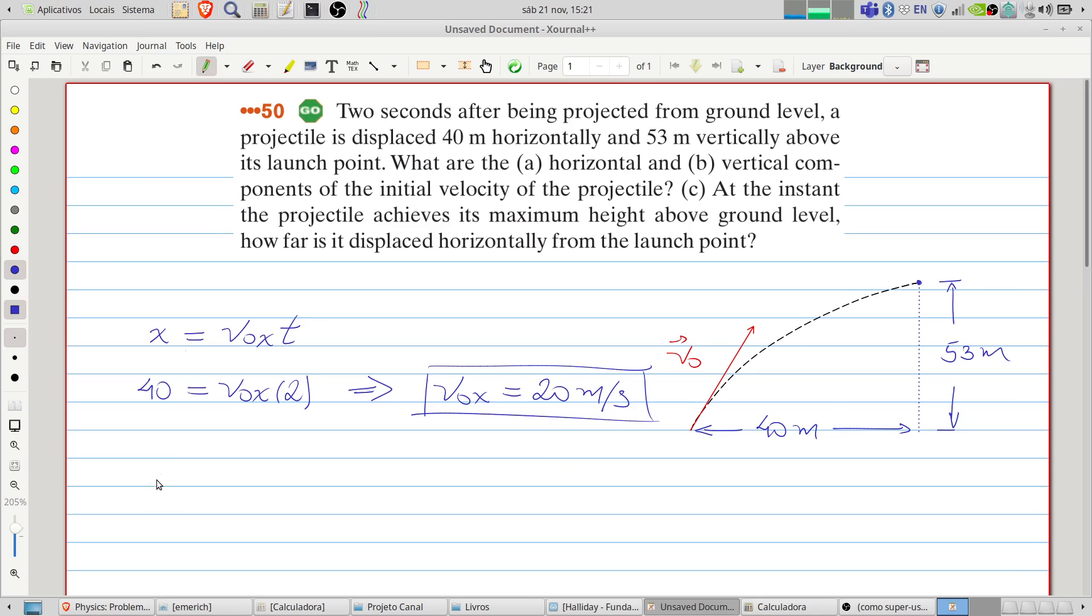In the y direction, the movement can be described as the position will be the initial position, 0, plus the initial velocity in the y direction times t, minus the acceleration. It's negative, the gravitational acceleration, times t squared.